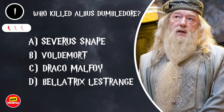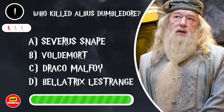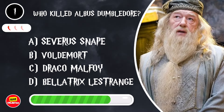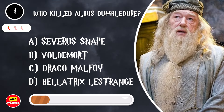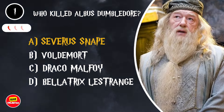Who killed Albus Dumbledore? A. Severus Snape. B. Voldemort. C. Draco Malfoy. D. Bellatrix Lestrange. It's A. Severus Snape.